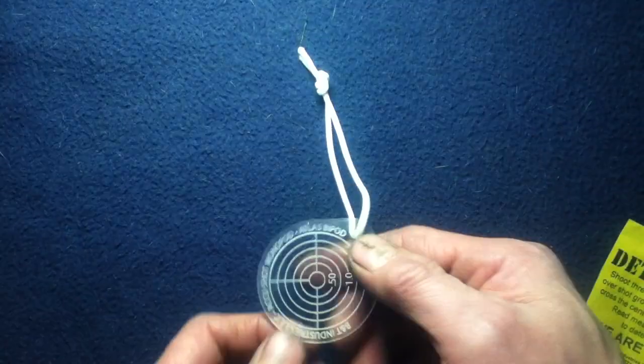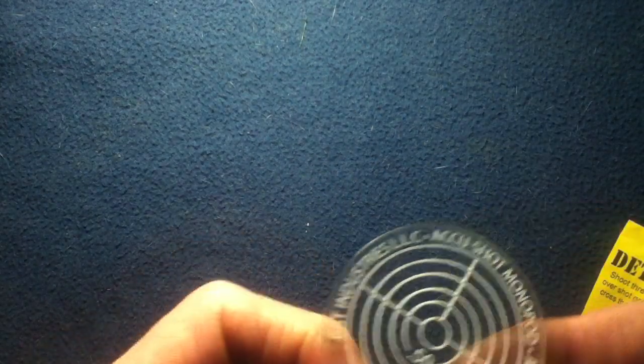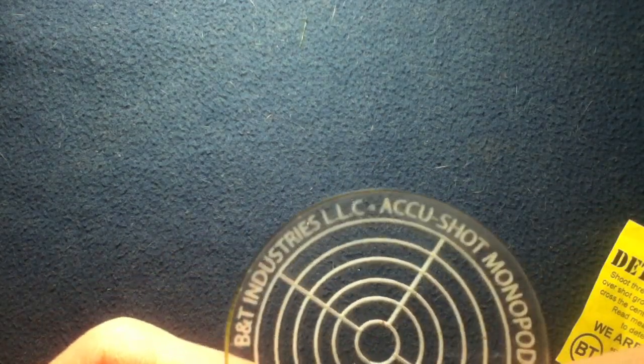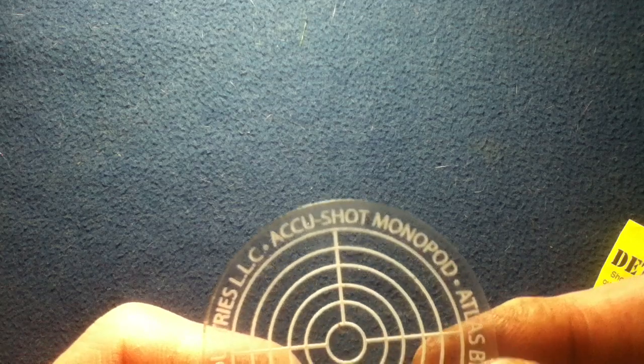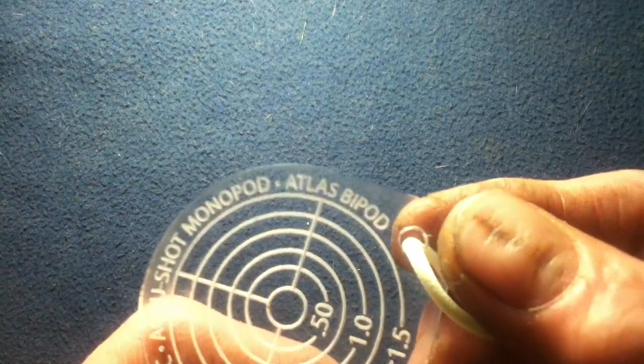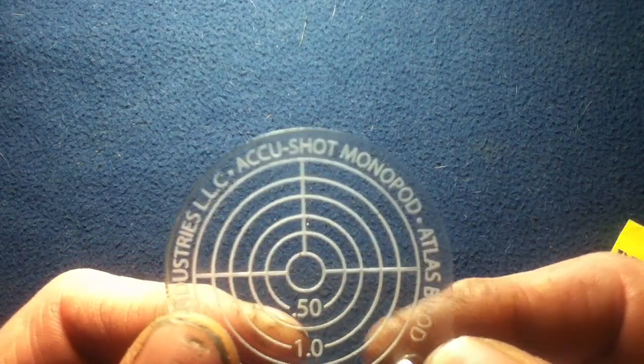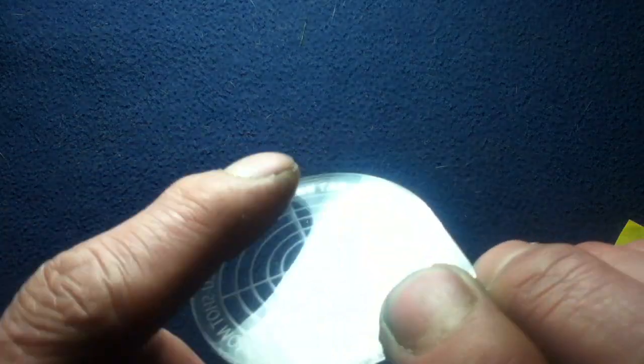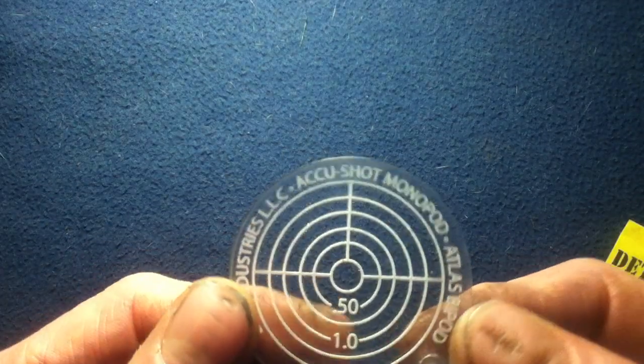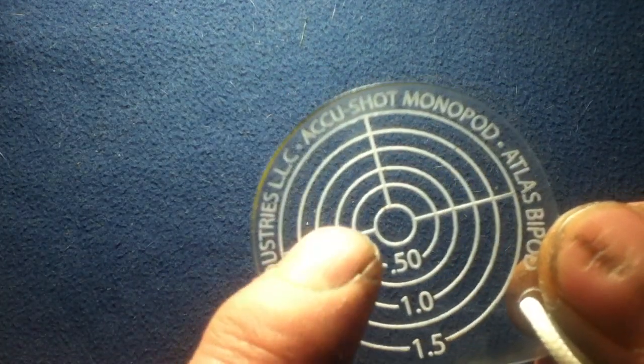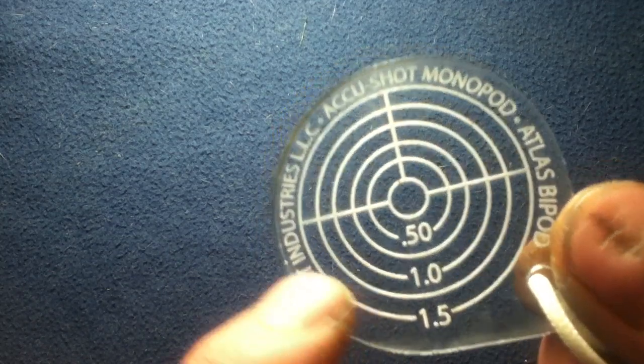So let's take a closer look at the device. You can see here, B&T Industries, LLC, AccuShot Monopod, Atlas bipod, as I said earlier. This side is smooth, so you can move it across the targets smoothly. And then this side is slightly etched to provide the detail on the measurements as well as the circles.